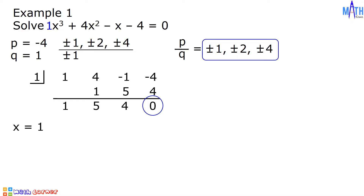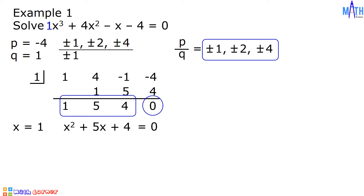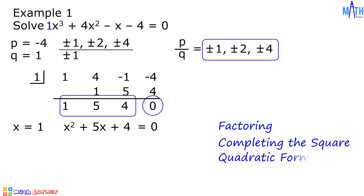Let us find the other roots. On the third row, 4 is the constant term, 5 is the coefficient of the linear term, and 1 is the coefficient of the quadratic term. We have x squared plus 5x plus 4. Let us equate this to 0, and we have a quadratic equation. Since this is a quadratic equation, we may use factoring, completing the square, or the quadratic formula in finding the roots. Let us factor this.